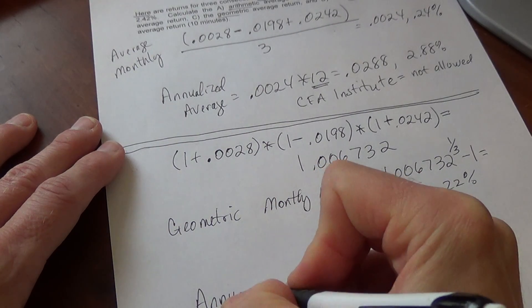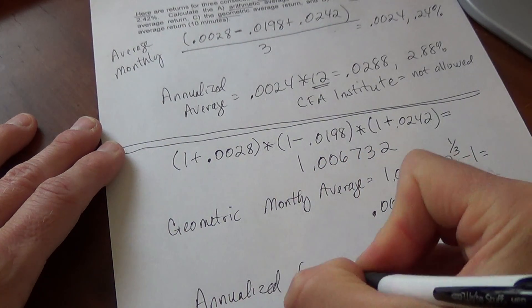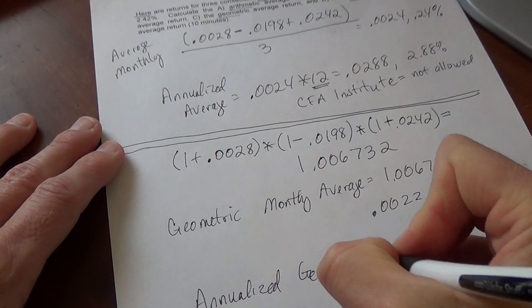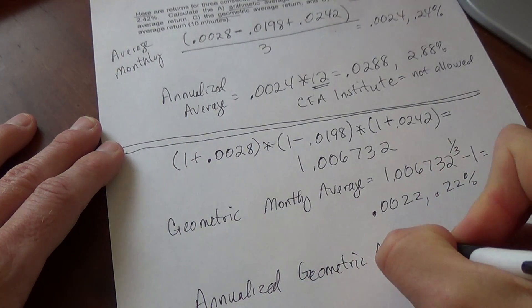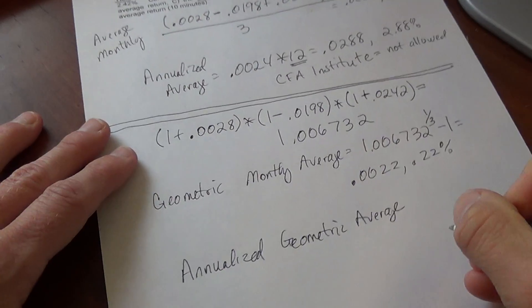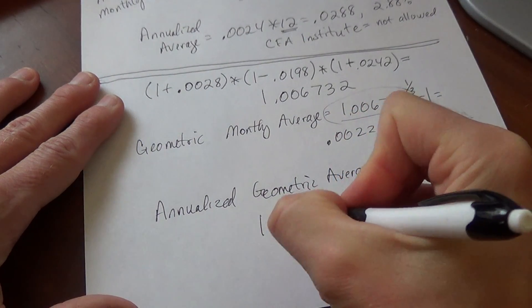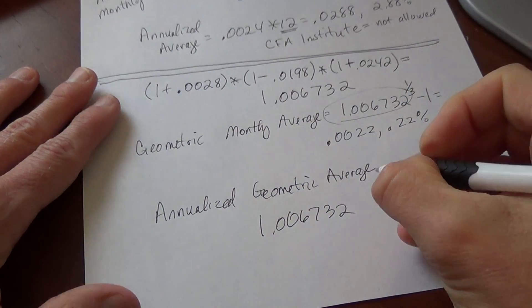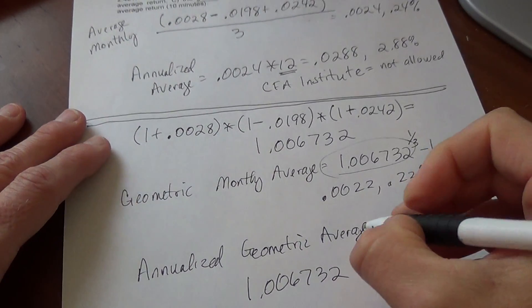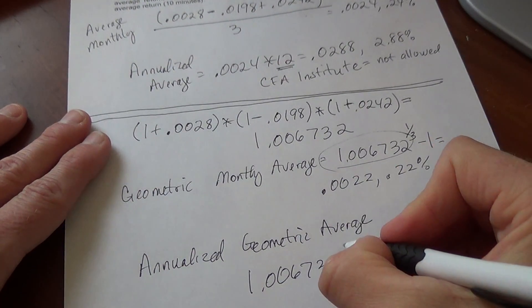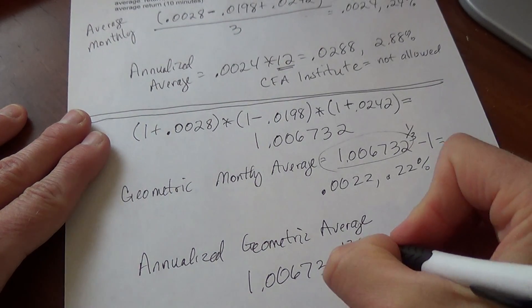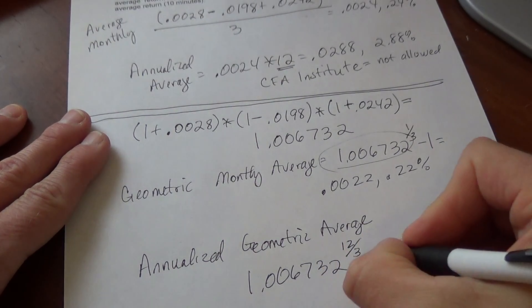The annualized geometric average, in this case, we take that product again, the 1.006732, and we're going to raise it now. Now there's 12 months in the year, so we're going to raise it to the 12 over 3, and subtract 1.